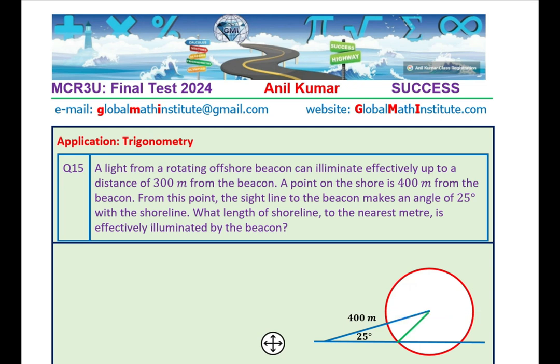Trigonometry is also a major unit, slightly difficult for some students. We have picked up a couple of questions from trigonometry. This is indeed a difficult application question. A light from a rotating offshore beacon can illuminate effectively up to a distance of 300 meters from the beacon. A point on the shore is 400 meters from the beacon. From this point, the sight line to the beacon makes an angle of 25 degrees with the shoreline, which is horizontal. What length of shoreline to the nearest meter is effectively illuminated by the beacon? Very important question. Apply sine law, cosine law. You can easily do it.